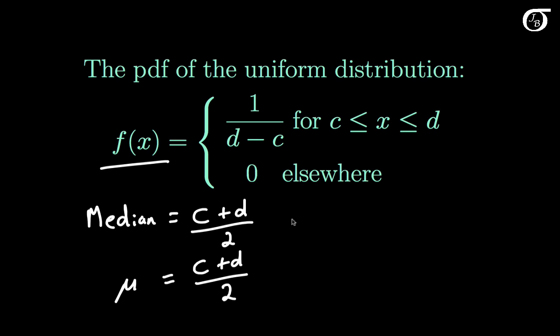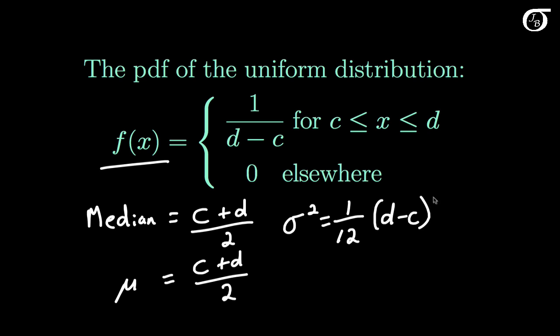The variance requires a little calculus to find. You can verify for yourselves that it is simply equal to 1 over 12 times d minus c squared. We need to use a little integration to find that.